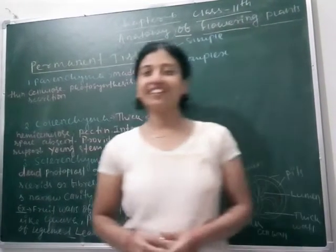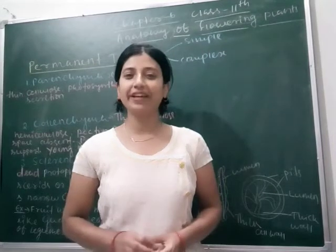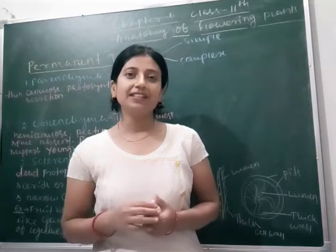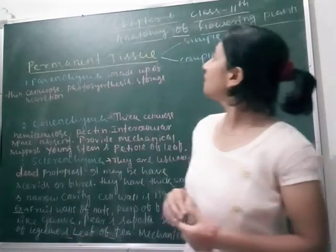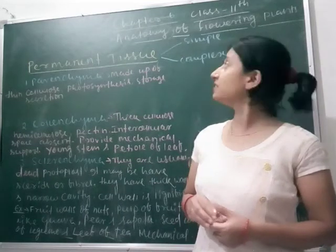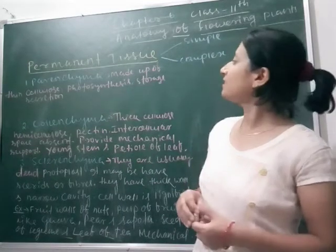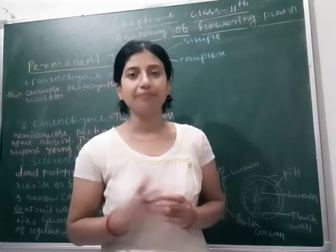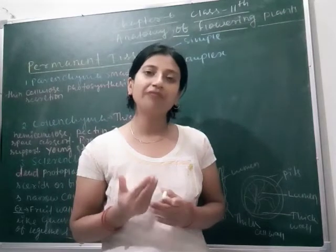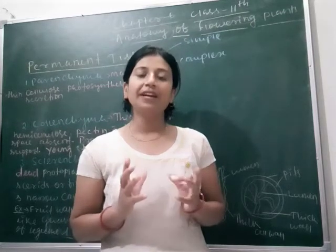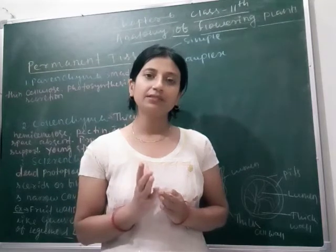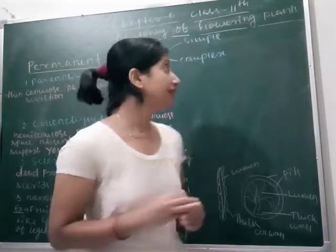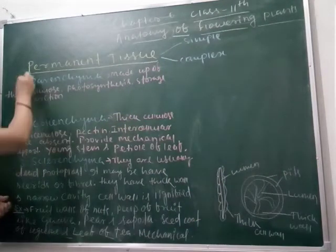Hello students, good morning, how are you? I hope you all are okay and enjoying the topic. We are continuing chapter 6 of class 11th, which is the anatomy of flowering plants, in which we are studying about different internal structures of the plant. In our last class we studied about different types of tissues and how they make up the plant and its different components. Today we are going to study the next topic, which is permanent tissue.